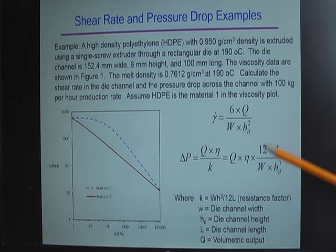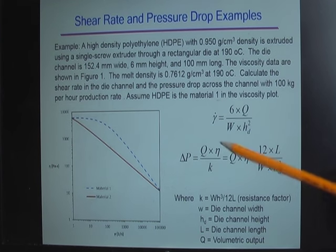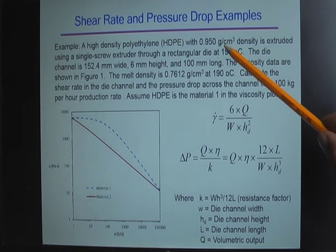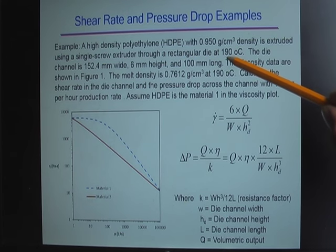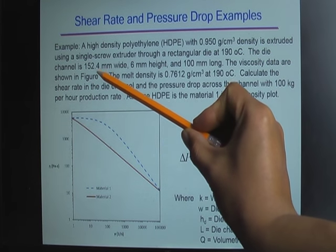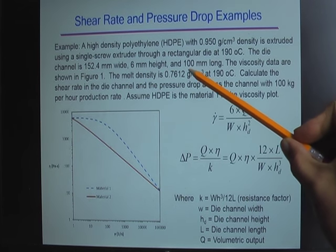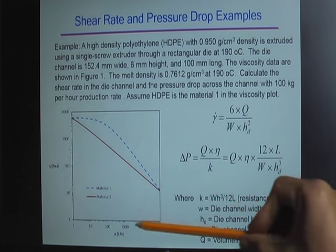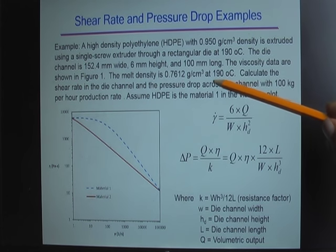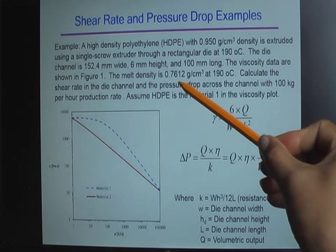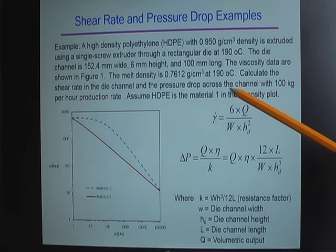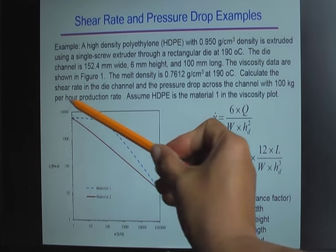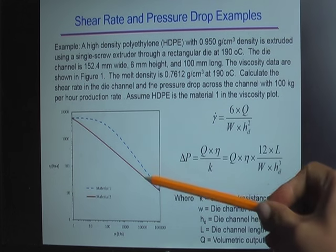Here is the example I'd like everyone to work on: extruding high-density polyethylene (HDPE) with a density of 0.950 g/cm³ through a rectangular die at 190°C. The die channel is 152.4 mm wide, 6 mm high, and 100 mm long. You can find the viscosity data for this material in the chart. At 190°C, the melt density is 0.7612 g/cm³. Calculate the shear rate in the die channel and the pressure drop across the channel, assuming a production rate of 100 kg/hr. Assume HDPE is Material 1.